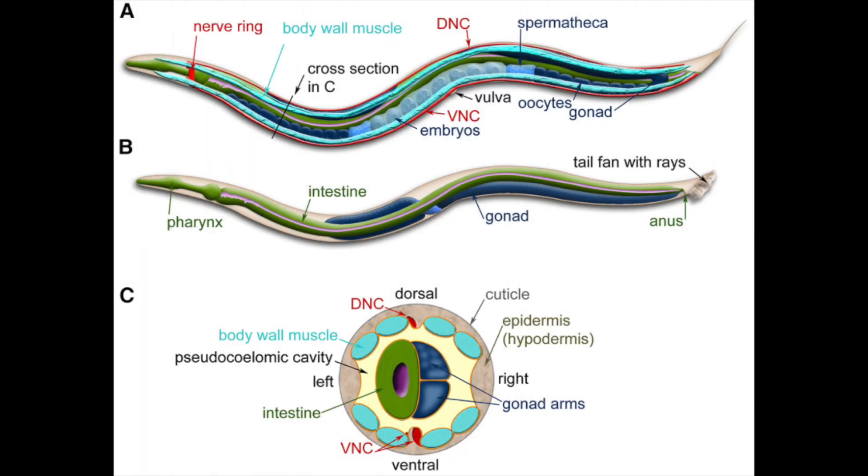The worms have ovular ends with a smooth body. They're hermaphroditic, which means many of the worms are females and they can reproduce with themselves.